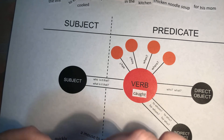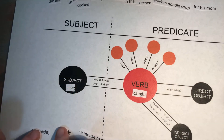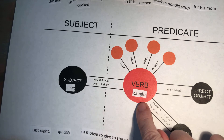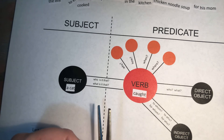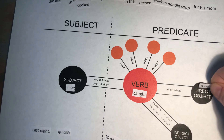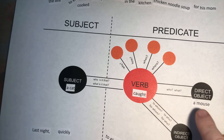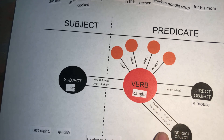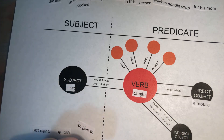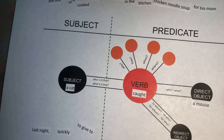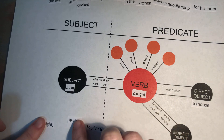Let's turn 'a cat' around. A cat caught. What is it a cat caught? A mouse. So let's cut out 'a mouse.' A cat caught a mouse. To whom did the cat catch the mouse? For the boy. So a cat caught a mouse for the boy. Now let's look at the rest of our sentence here.